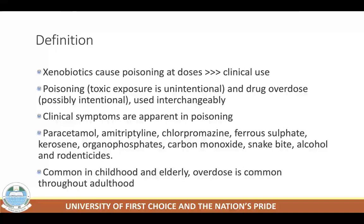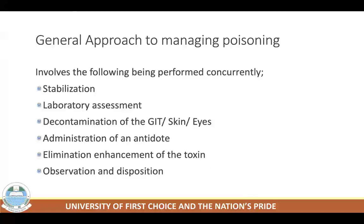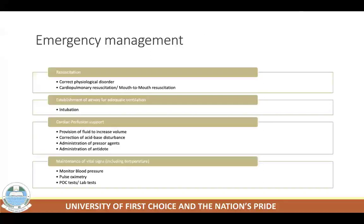Most poisoning instances are common in childhood and elderly patients, but overdose has an incidence that is fairly stable throughout adulthood. The general approach to managing poisoning includes: stabilization, laboratory assessment, decontamination of GIT, skin and eyes, administration of an antidote, elimination and enhancement of toxin removal, observation, and disposition.